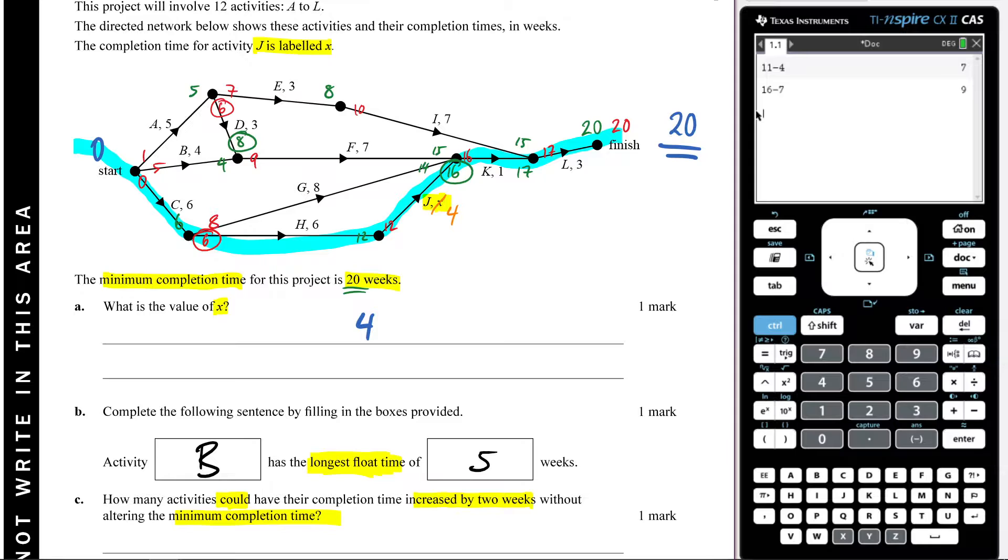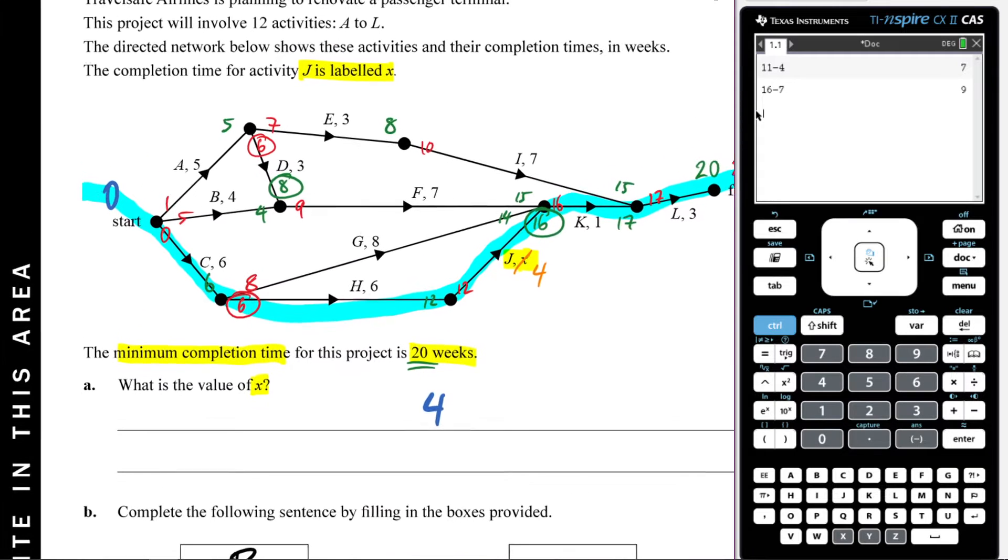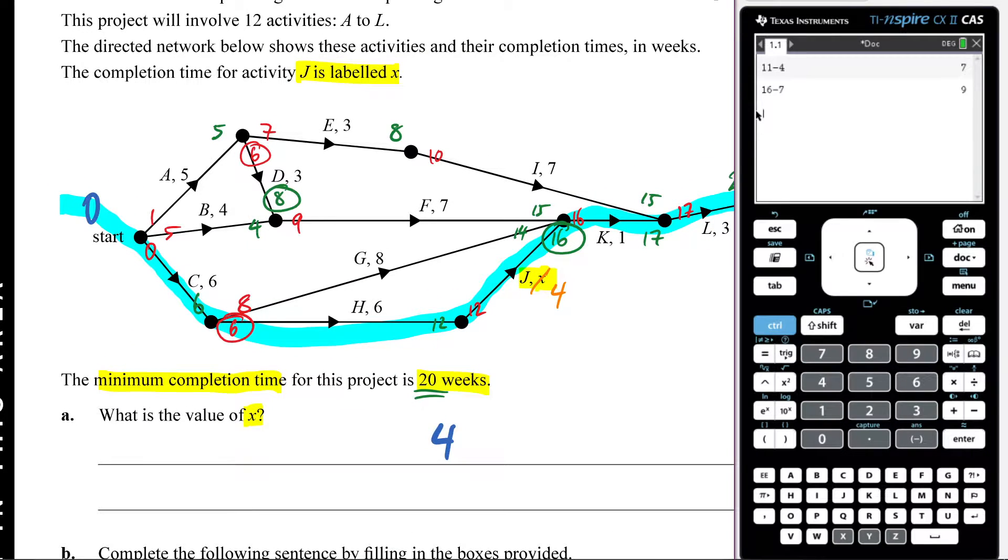So looking through these, I just said, alright, which of these have a float time of two or greater? So I could bump up, and I'll do this in orange. I has a float time of two, because ten minus eight is two, so I is one of them. So let's circle I.